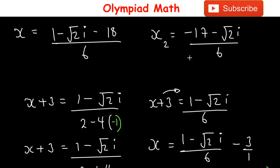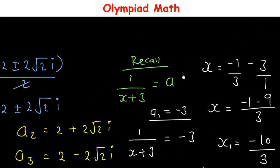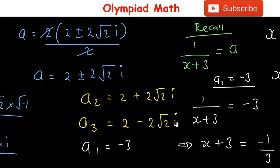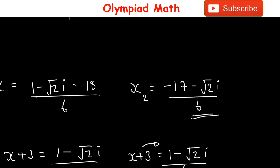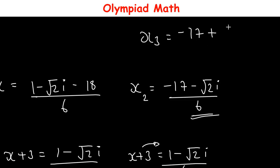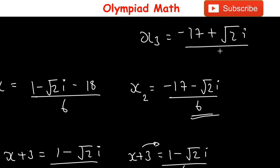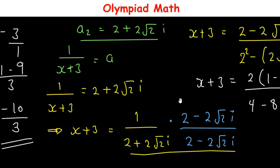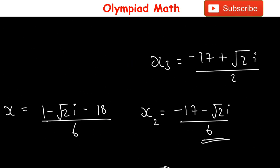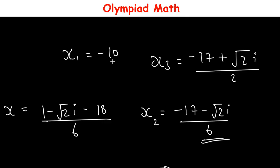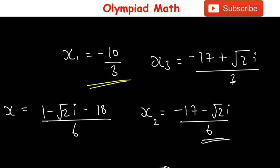For the third solution, a₃ = 2 - 2√2·i. Following the same process, x₃ = (-17 + √2·i)/6. So the three solutions are: x₁ = -10/3, x₂ = (-17 - √2·i)/6, and x₃ = (-17 + √2·i)/6.